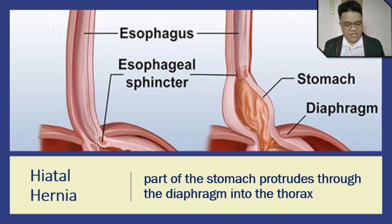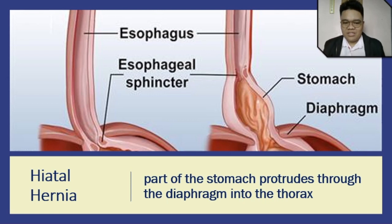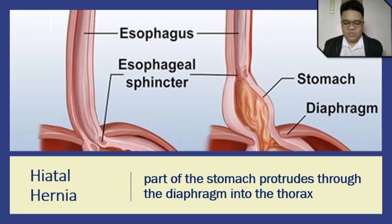Hiatal hernia is also known as diaphragmatic hernia. It's referred to as diaphragmatic because we are looking at the hiatus in the diaphragm. If you can recall in your anatomy, the hiatus is where the esophagus enters through the diaphragm so that it can go to the abdominal area. Hiatal hernia is a condition wherein a part of the stomach protrudes through the diaphragm into the thorax.